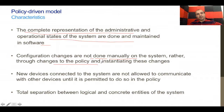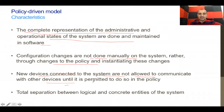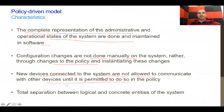To make changes to the data center infrastructure, you go back to the policy, make the changes, push the policy down, and the changes get implemented. The fabric or concrete layer sends acknowledgement back to the controller confirming success or reporting errors. Also, new devices connected to the system are not allowed to communicate with other devices until permitted in the policy. By default in ACI, a new device cannot communicate until you configure the policy to allow it and define which group it belongs to. There is total separation between the logical and concrete entities.